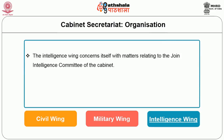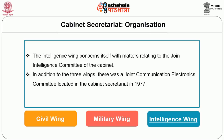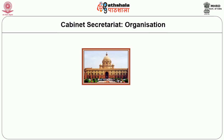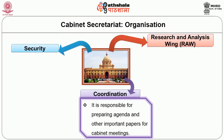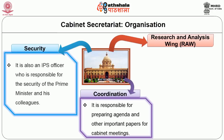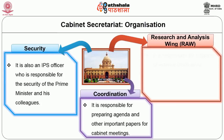The intelligence wing concerns itself with matters relating to the joint intelligence committee of the cabinet. In addition to the three wings, there is also a joint communication electronics committee located in the cabinet secretariat in 1977. Besides the cabinet secretary, there are three other secretaries in the cabinet secretariat heading three wings respectively: first, security; second, coordination; and third, Research and Analysis Wing, commonly known as RAW. The secretary coordination is responsible for preparing agenda and other important papers for the cabinet meetings. The secretary security is also an IPS officer who is responsible for the security of the prime minister and his colleagues. Secretary RAW is responsible for collection of external intelligence.